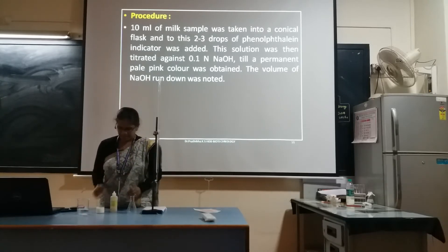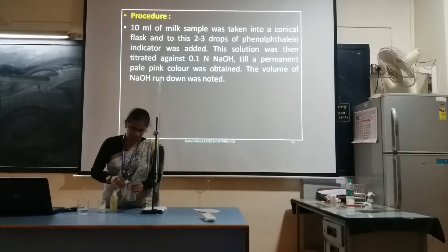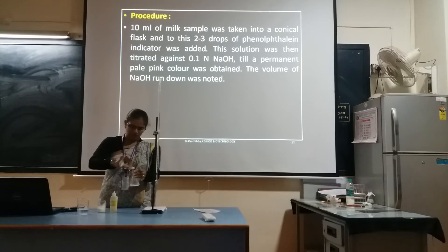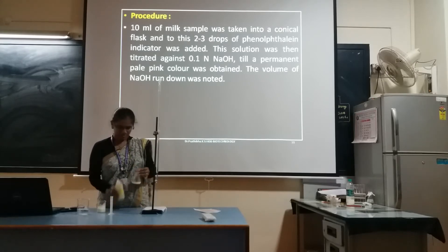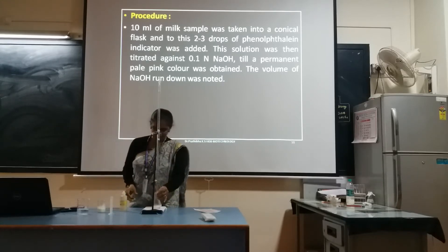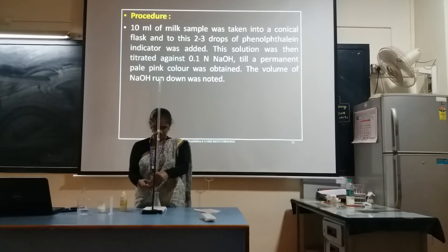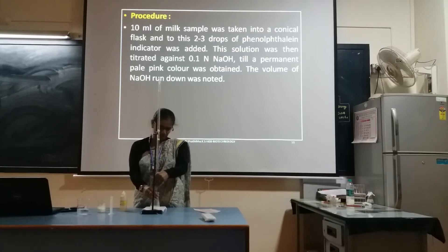I have taken the conical flask here. Let me measure the milk sample for 10 ml. I have taken the 10 ml milk sample — put it in the conical flask, then add 2 to 3 drops of phenolphthalein indicator. Then titrate against the NaOH, adjusting the burette to release drop by drop into the conical flask.